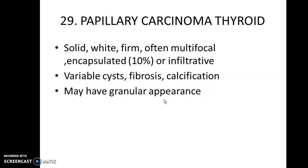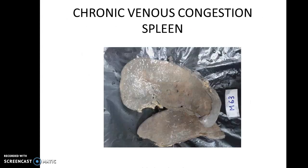Remember, papillary carcinoma of thyroid can have its first presentation as a lateral aberrant thyroid. What is a lateral aberrant thyroid? It is nothing but metastasis — when you actually aspirate or do FNAC, it turns out to be a cystic metastasis of the lymph node. That is why it is called a lateral aberrant thyroid.